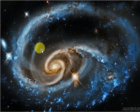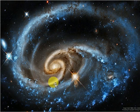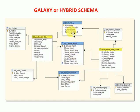In a galaxy there are multiple stars and those stars are interconnected, which is what we call fact constellation. Looking at the diagram, we have two facts and you can see the dimensions — these three dimensions are shared across those two facts. Those shared dimensions are called conformed dimensions.